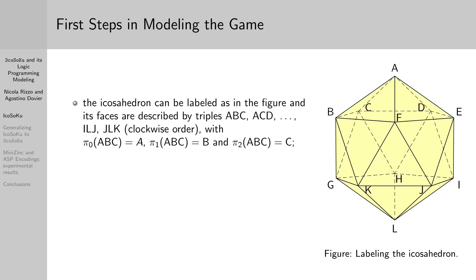We can take the first steps in modeling the game by labeling the icosahedron with the letters from A to L, as seen in the figure on the right, and describing its faces as triples of vertices, using operators pi0, pi1, and pi2 to obtain the three vertices of a given face.